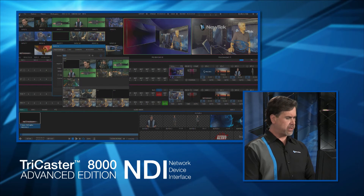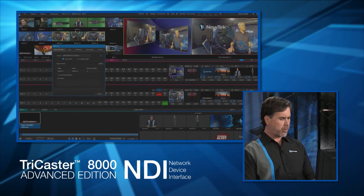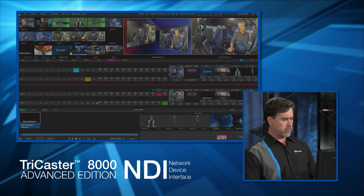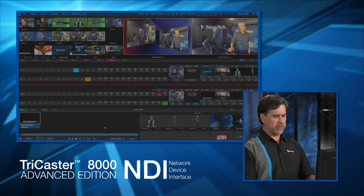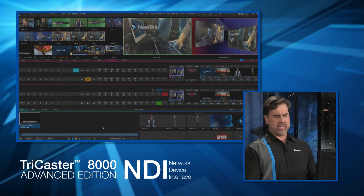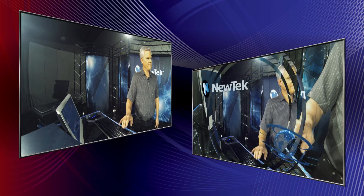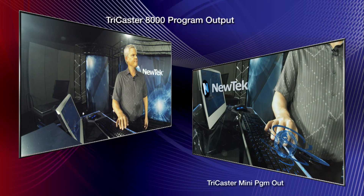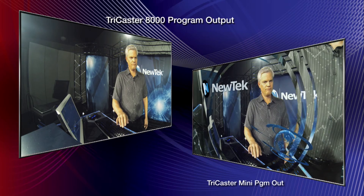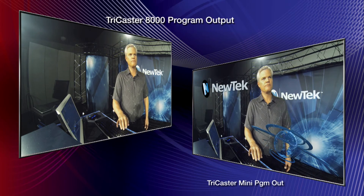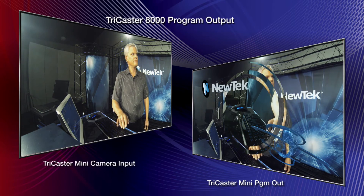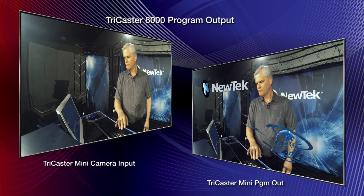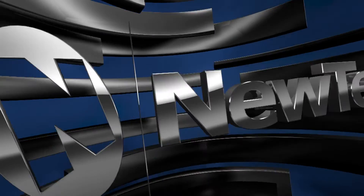So the same cameras you're using to do your production are now available to me in my production. As you can see here, we've got a double box effect showing the switched output of your TriCaster and one of the input cameras from your TriCaster being used in production inside of my TriCaster.